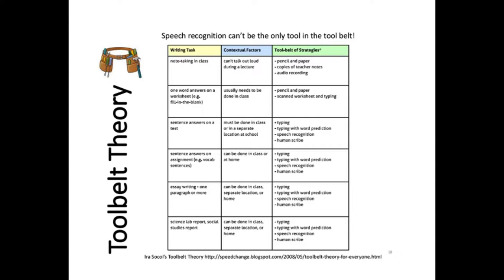One of the first things in the guide is a page called Tool Belt Theory, which is a reminder that speech recognition would almost never be the only writing tool. The blogger Iris Sokol describes the idea that we need to prepare students to have a range of tools — a tool belt — that they can pick and choose from. This chart in the guide illustrates the tool belt of AT features and other accommodations that might be needed for writing, because speech recognition is not the end-all be-all of AT tools for writing.